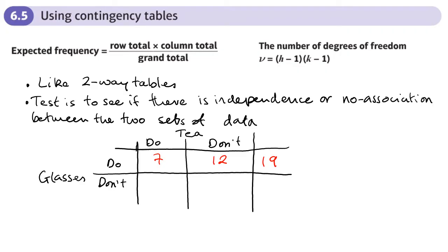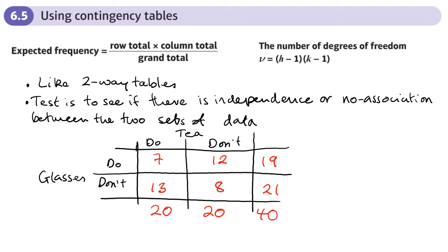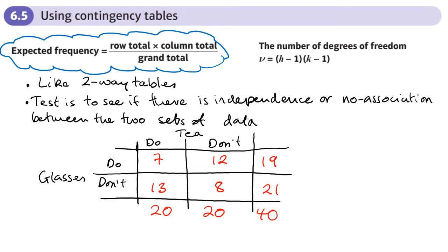It's just like a two-way table where we're going to have all our row totals and column totals at the end, with totals of 20, 20, and 40. The way I work out whether there's an association between people wearing glasses and people drinking tea is I'm going to work out what I would expect each cell to contain.